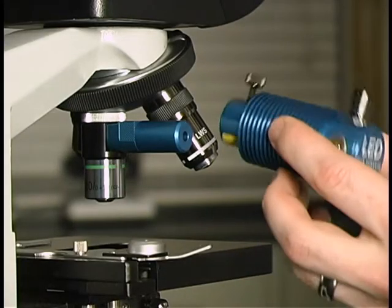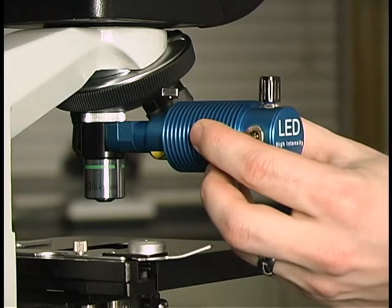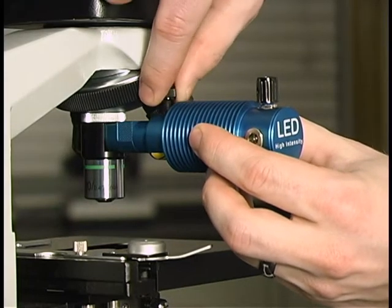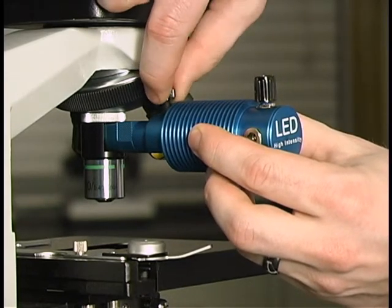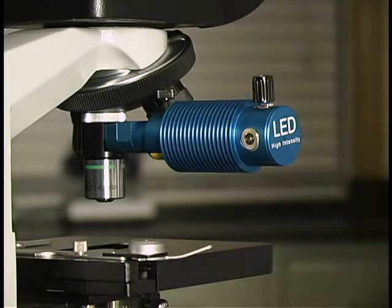Next, slide the LED light source directly onto the filter set arm. Join these two components together and tighten the thumb screw on top to secure them in place.